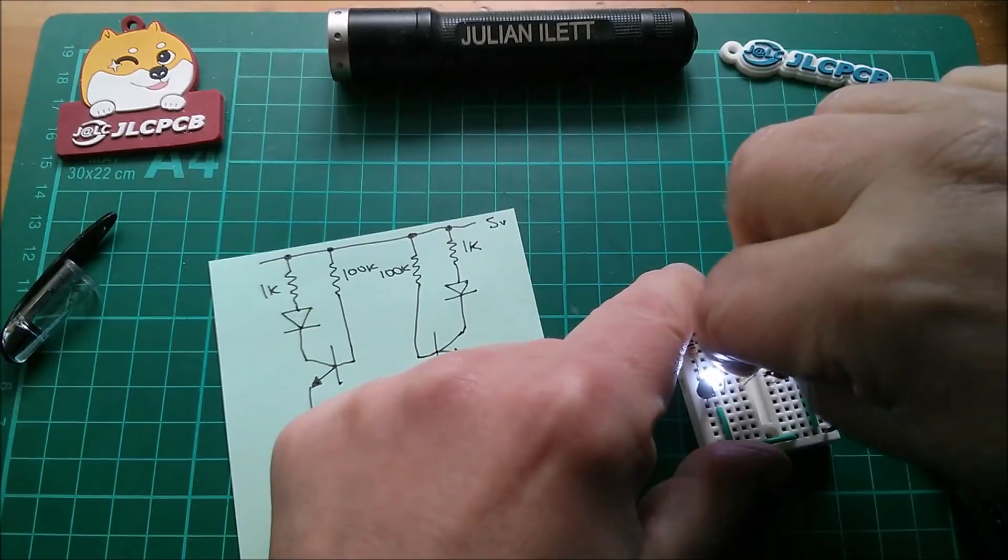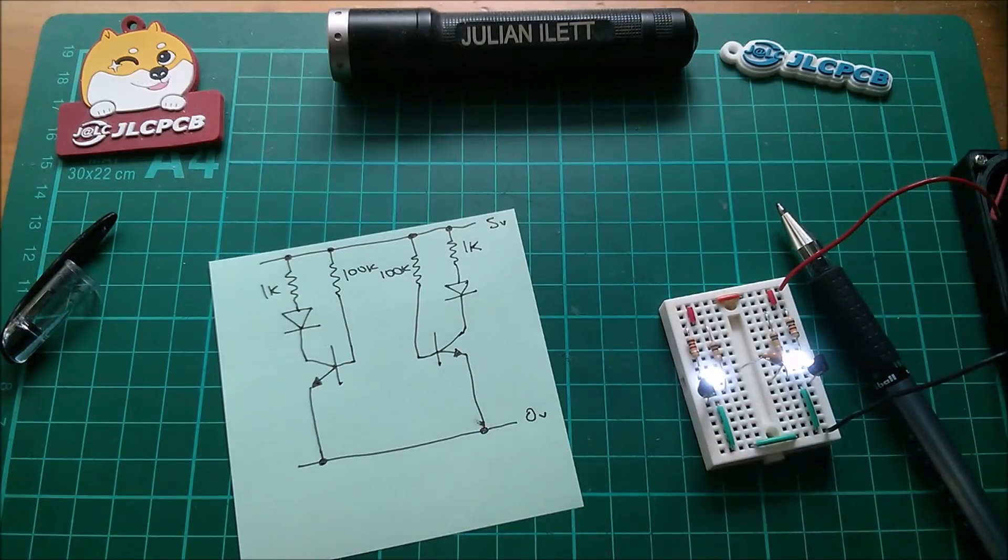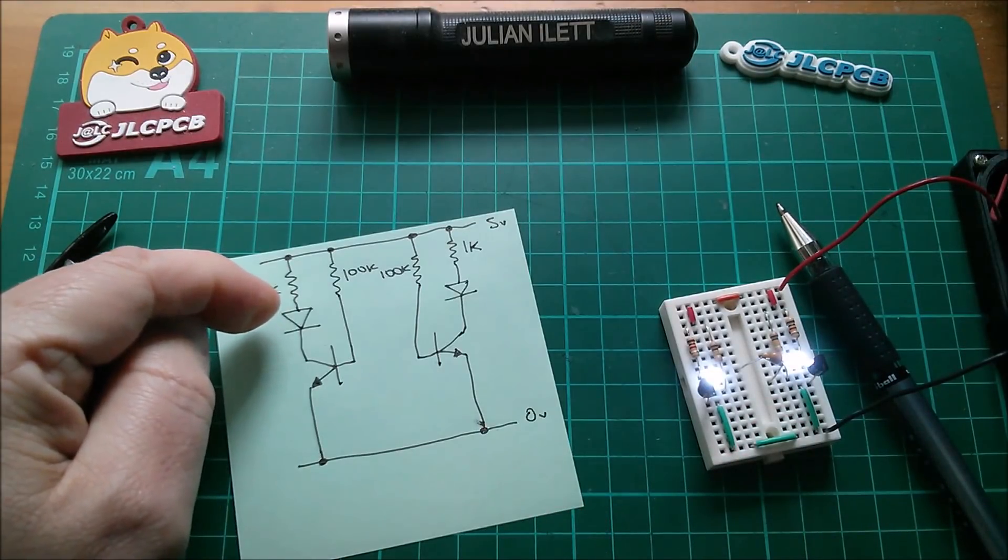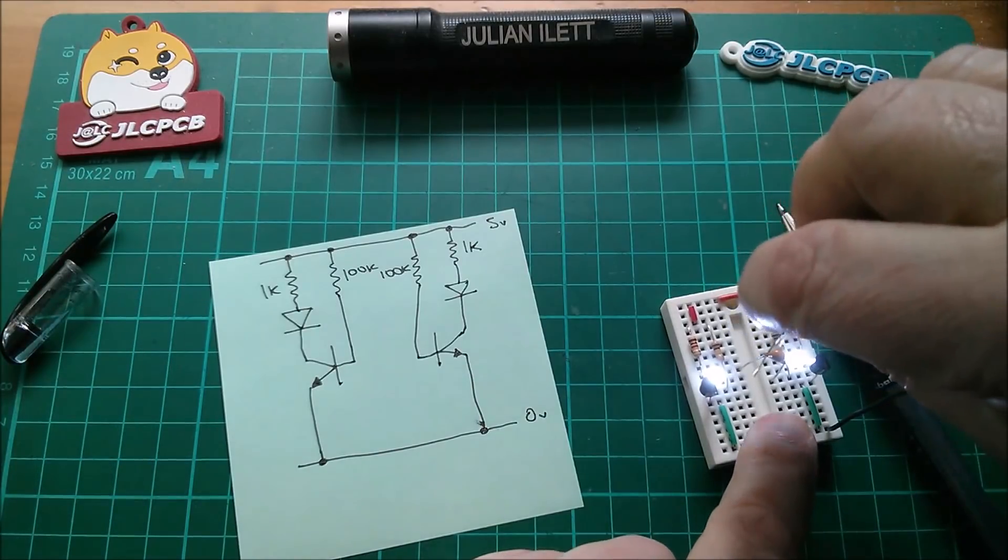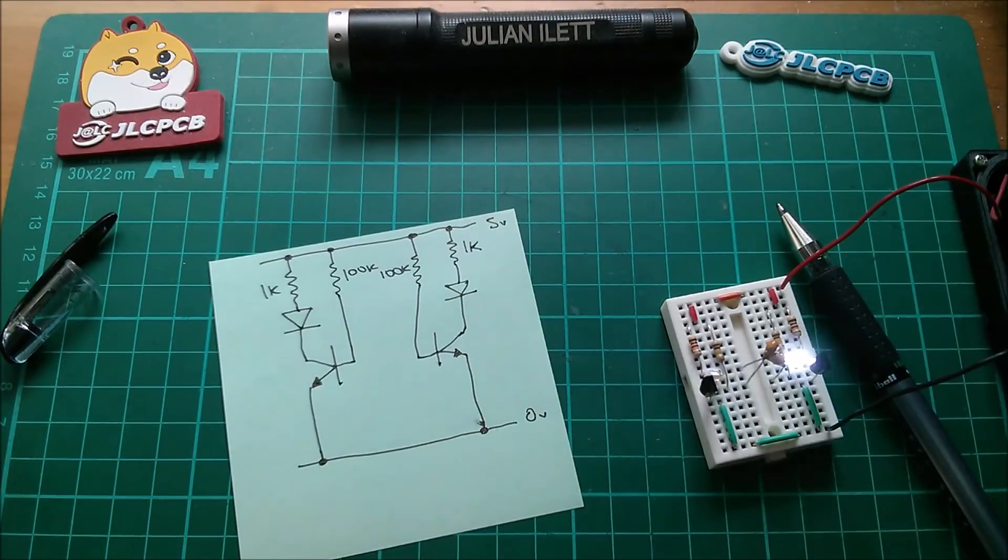But what's interesting is I can also put it from base on one side to the junction between the LED and the resistor and vice versa. And it still flashes, although it flashes a little bit more quickly. And I'm sure there's a good reason for that.